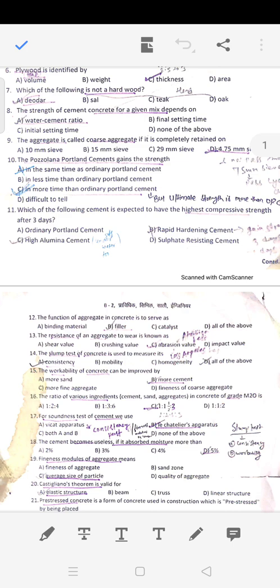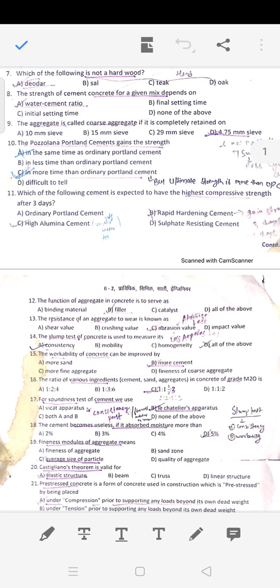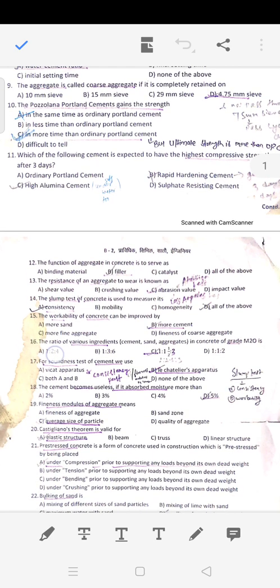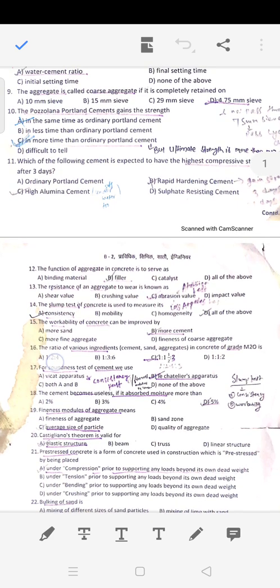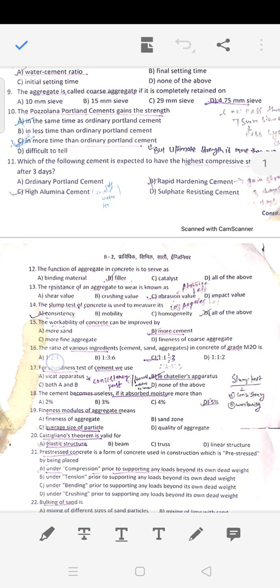An aggregate is called coarse aggregate if it is completely retained on 4.75 mm sieve.